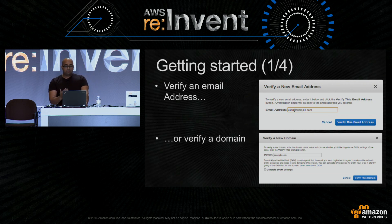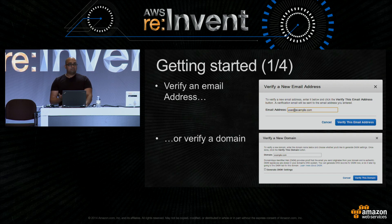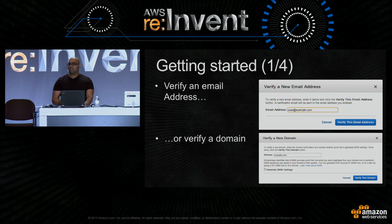To verify a domain, you initiate the process the same way by going into the console. When you hit the button to verify the domain after you've typed it in, we'll give you a DNS record for you to publish via your DNS provider. Once you publish those records, SES will automatically recognize their existence, and that domain will be verified with us. You can then start sending emails from any address on that domain.